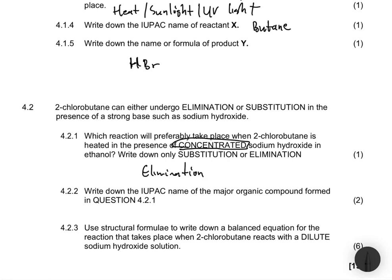4.2.2 says write down the IUPAC name of the major compound formed in 4.2.1. So we had 2-chlorobutane, and it is going under elimination. When it goes under elimination, we are going to lose the chloro, and we're going to be left with but-2-ene.